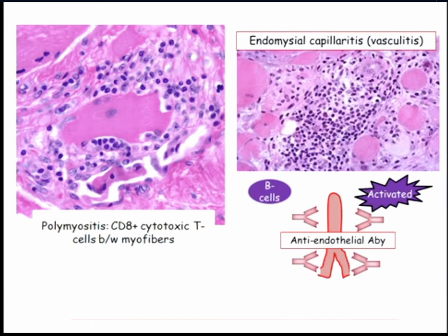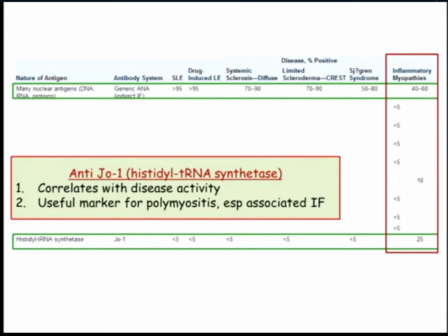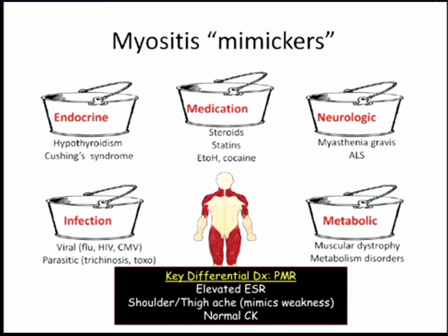The one other variant they test is the antibody — they describe the disease and ask you to choose among autoantibodies. The antisynthetase antibody is described as anti-histidyl transfer RNA synthetase, also known as Jo-1. They won't say Jo-1; they'll describe it that way. The key differential to keep in mind is PMR — polymyalgia rheumatica.